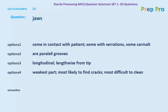Question number thirteen: jaws. The options are: come in contact with patient, some with serration, some carmalt; are parallel groups; longitudinal lengthwise from tip; weakest part, most likely to find cracks, most difficult to clean. The correct answer is come in contact with patient, some with serration, some carmalt.